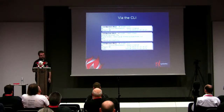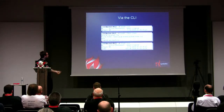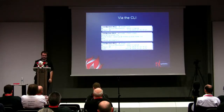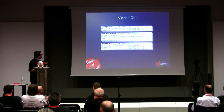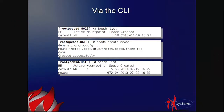Usage is pretty simple. 'beadm list' shows what boot environments you have — on a fresh box you'll have 'default'. I'm going to create a new one, call it 'newbie' for lack of a better word. It's going to create a new GRUB config, apply a theme, and when I list again, I have 'newbie' created, only using 672K. It's a snapshot and clone, so it only grows as the contents change. They're cheap and super fast to make.